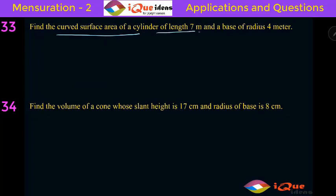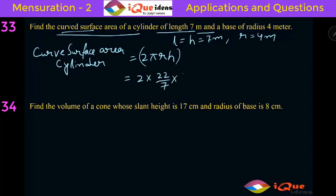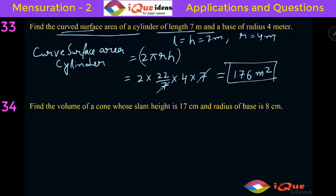Next, the curved surface area of a cylinder where length (height) is 7 meters and base radius is 4 meters. The curved surface area of a cylinder is directly 2 Pi r h. So it is 2 into 22 by 7 into 4 into 7 — the 7s cancel, giving 2 into 22 into 4, that is 44 into 4, which equals 176 meter square.